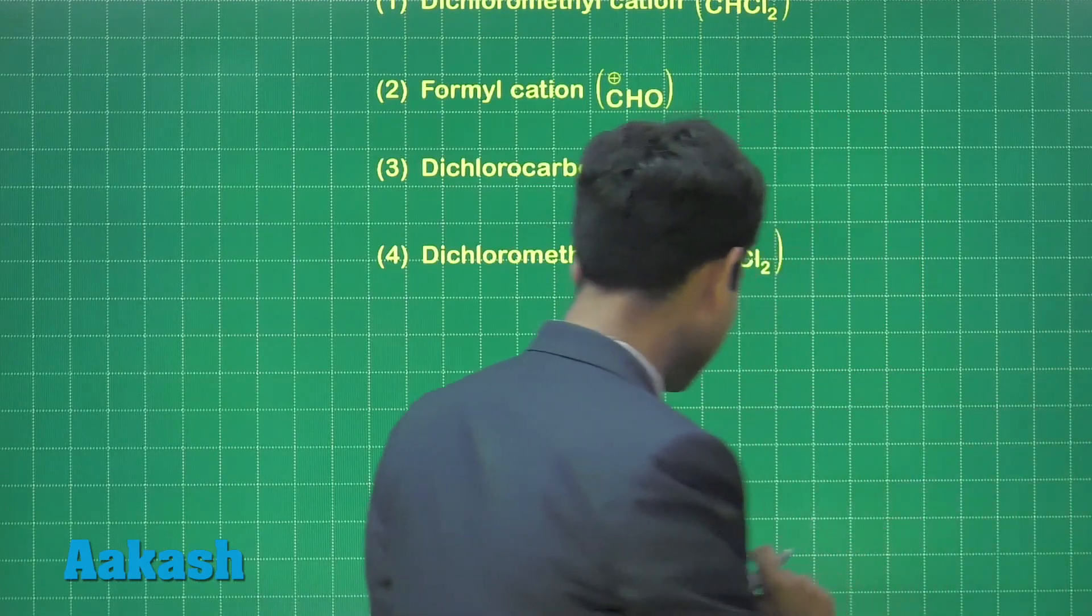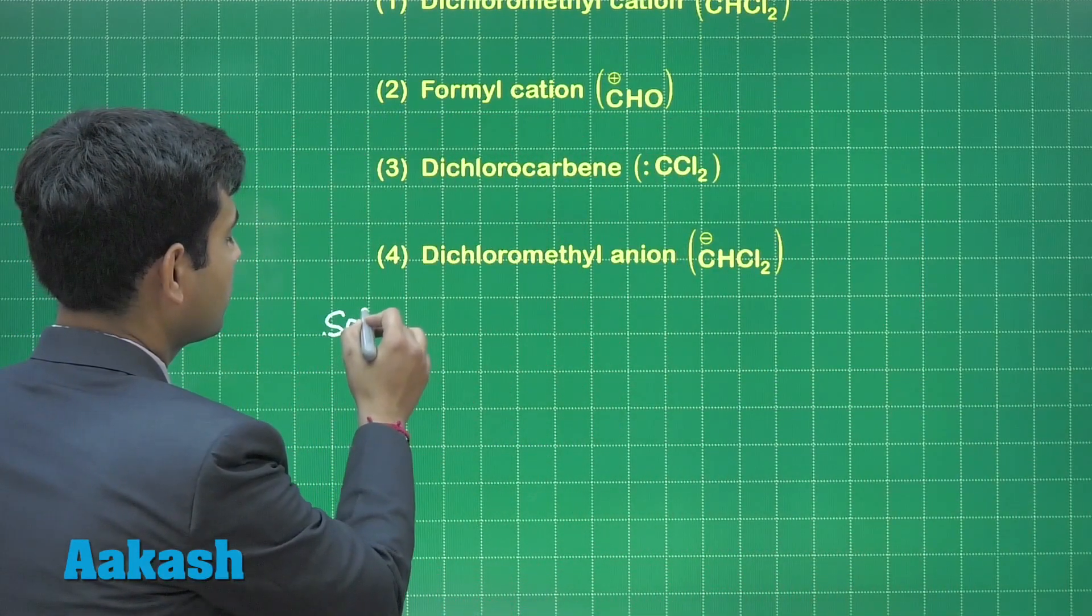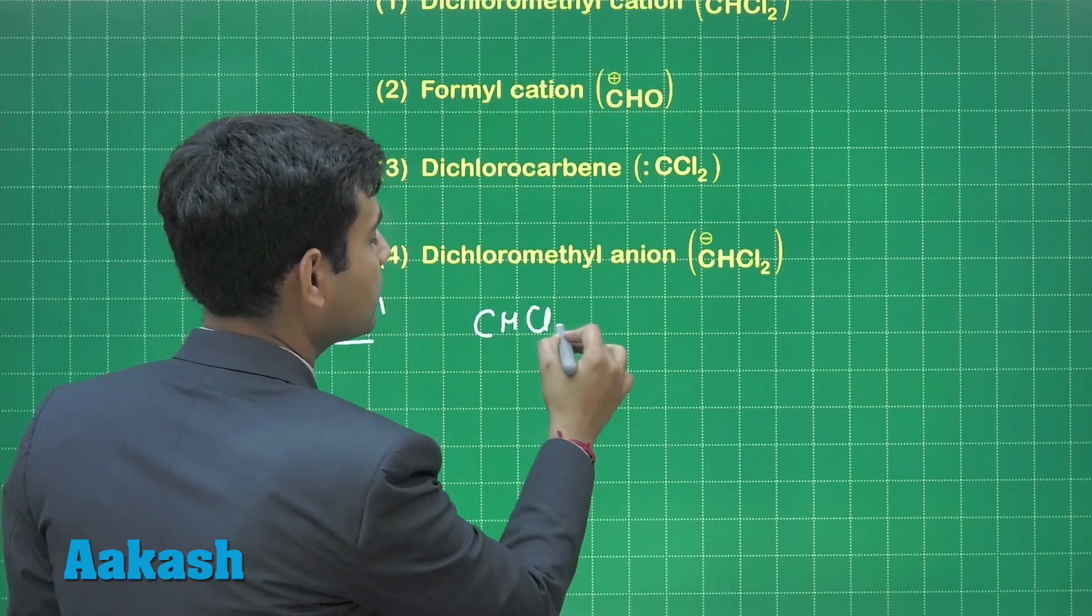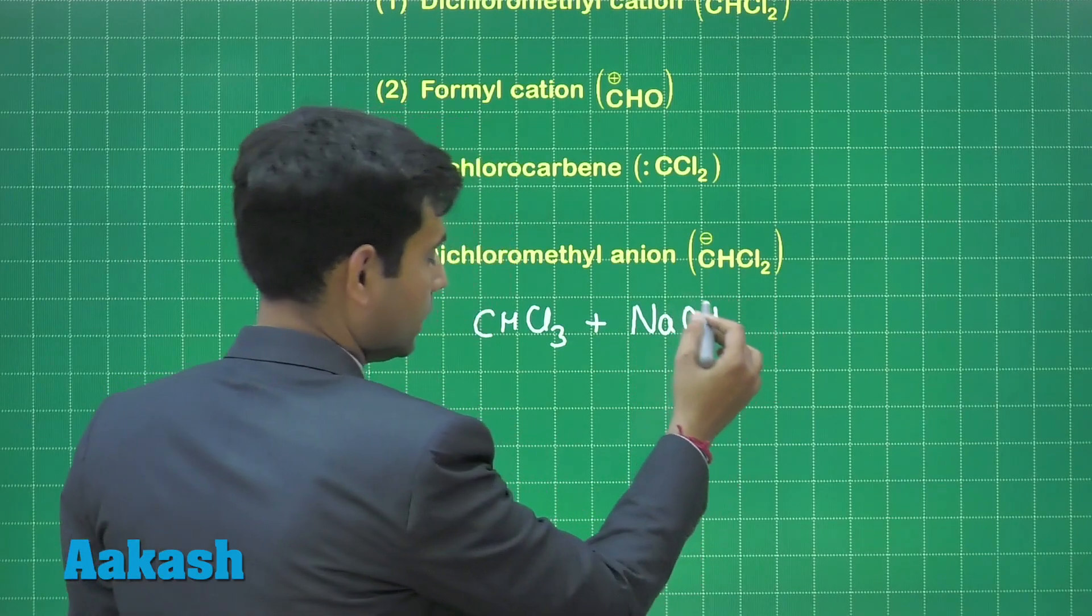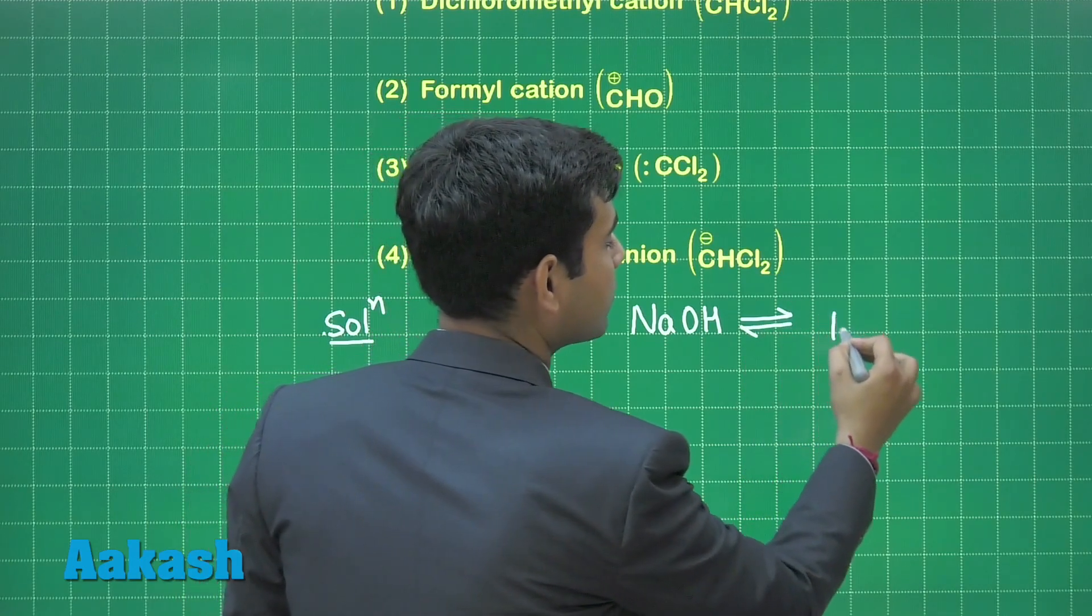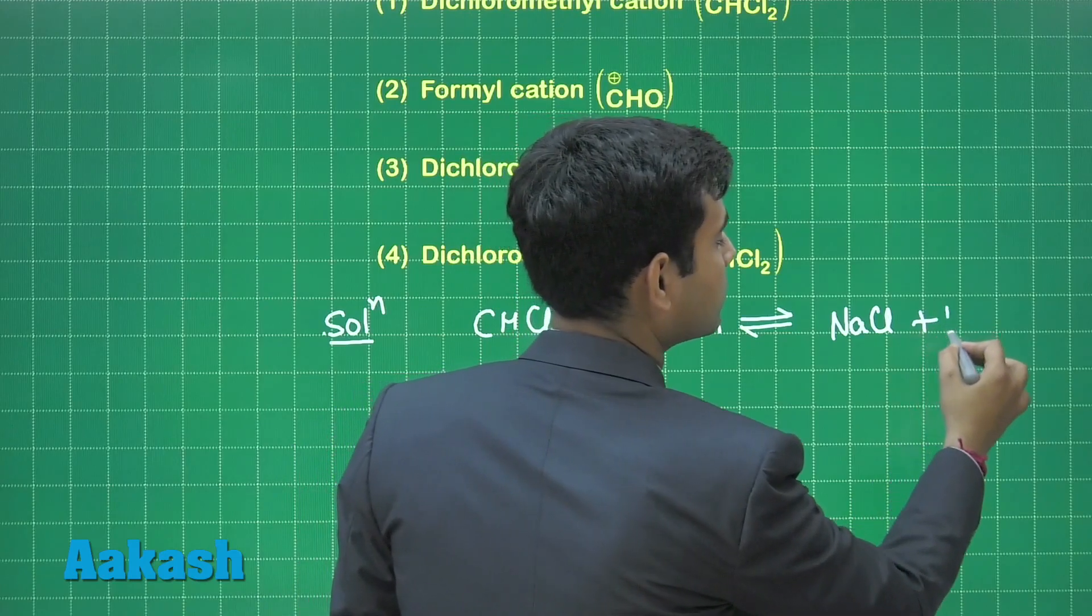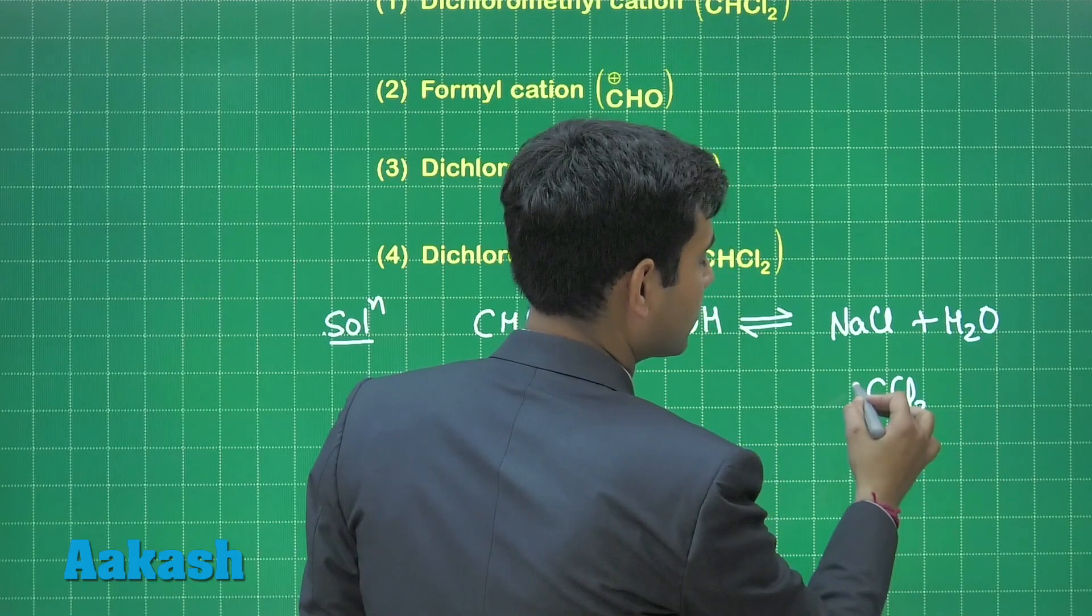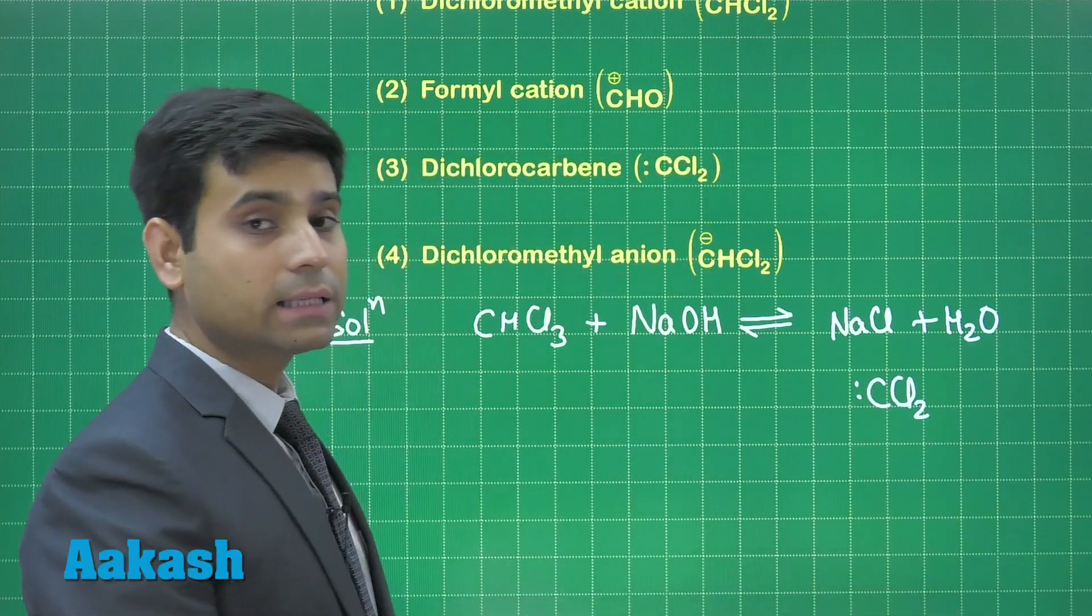As we know, when chloroform reacts with a base like sodium hydroxide, it gives us NaCl, water, and most importantly, dichlorocarbene as the electrophile.